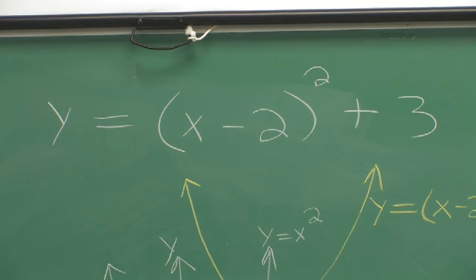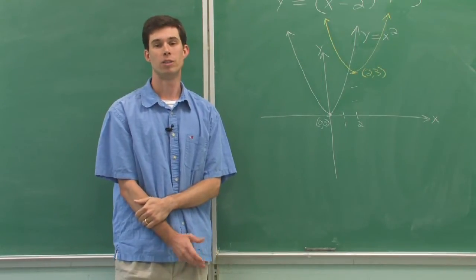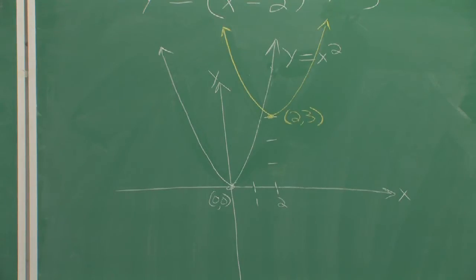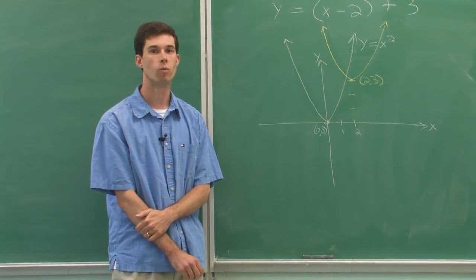Because of the square, we know that this will basically be a parabola shape. And so I'll start off with that graph first, our basic parabola, y = x². And that's shown here in white.